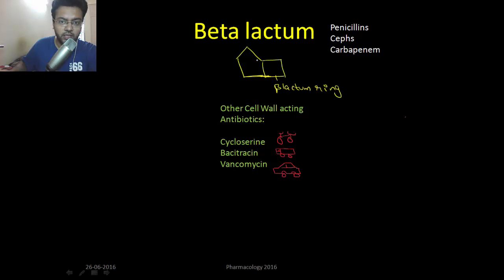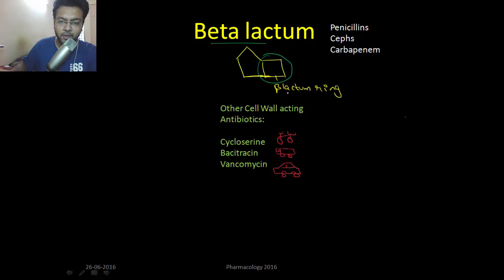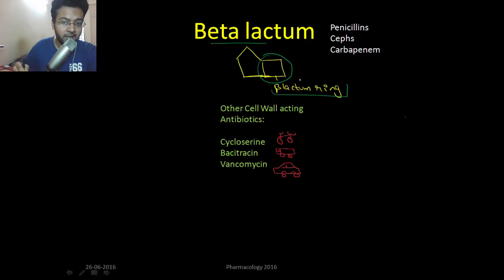Let's jump to chemotherapy and begin with beta-lactams. They are called beta-lactams because they have a beta-lactam ring in their structure, and this ring is destroyed by penicillinase or beta-lactamase, which is produced by bacteria. The drugs included in beta-lactams are penicillins, cephalosporins, and carbapenems.